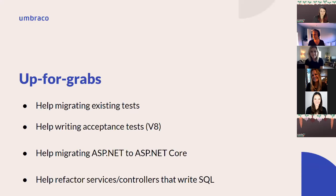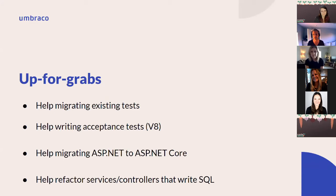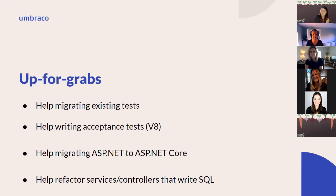To get involved, we have some 'up for grabs' tasks. As I said, most are about big tasks where you can't solve everything in one PR, but you can pick up one area — like migrating existing tests. Right now we have one big test suite that runs on framework, combining unit tests and integration tests. These have to be migrated into two new projects: one for unit tests and one for integration tests. The goal is to have unit tests isolated so we can execute a lot of tests very fast instead of waiting 20 minutes every time.